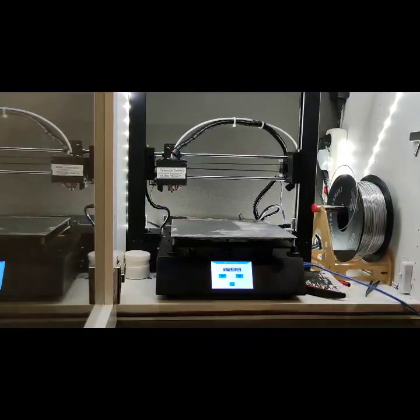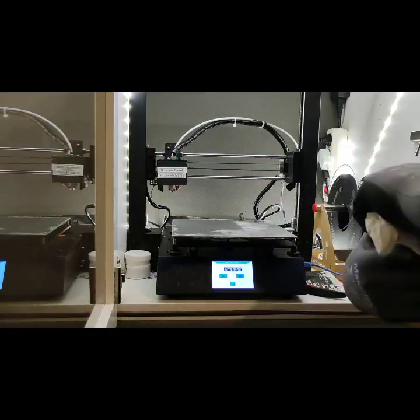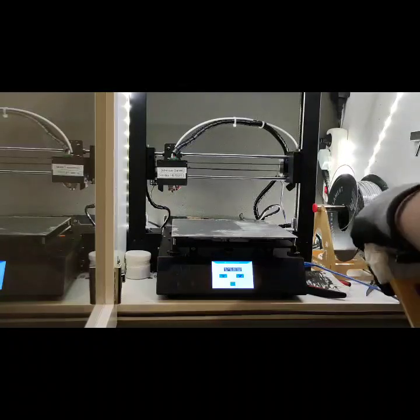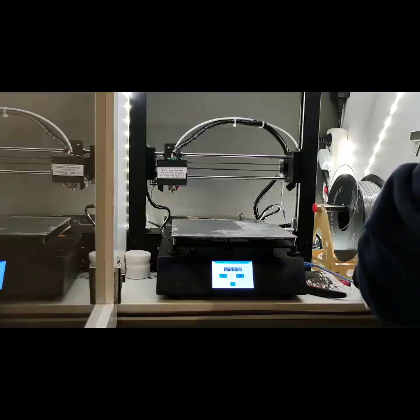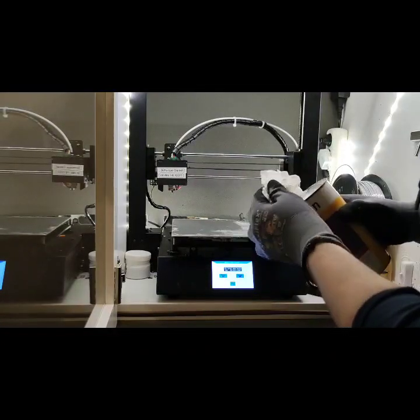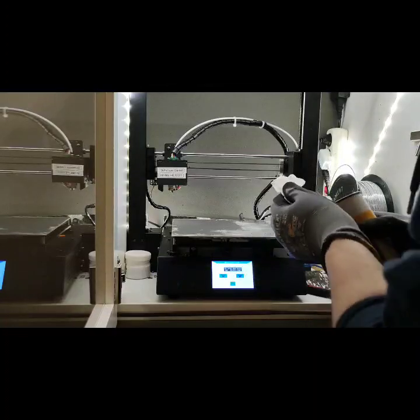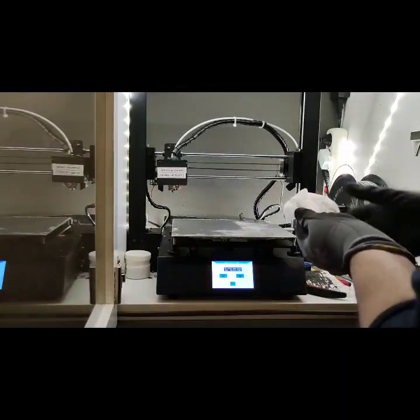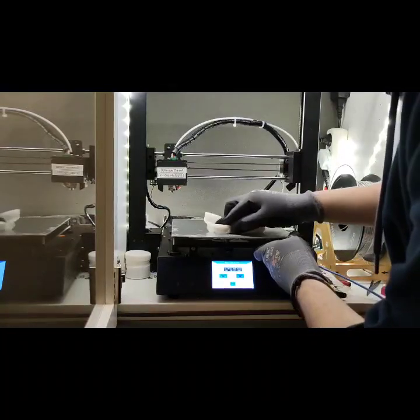After the heat bed cooled down a little bit, I will use acetone to remove the glue from the aluminum plate. You should open the windows, it's quite smelly. This will take some time.